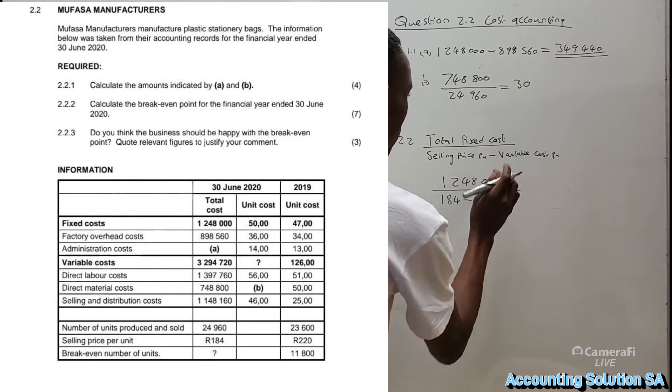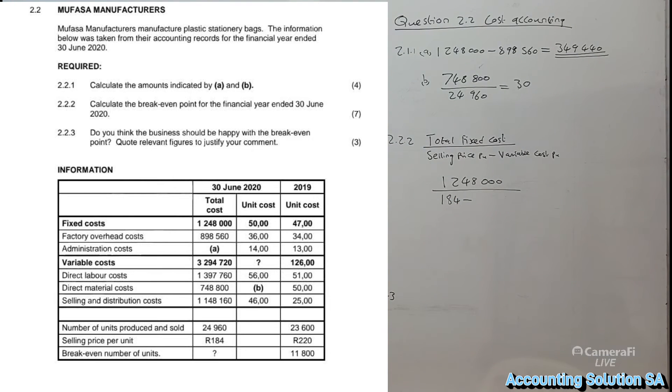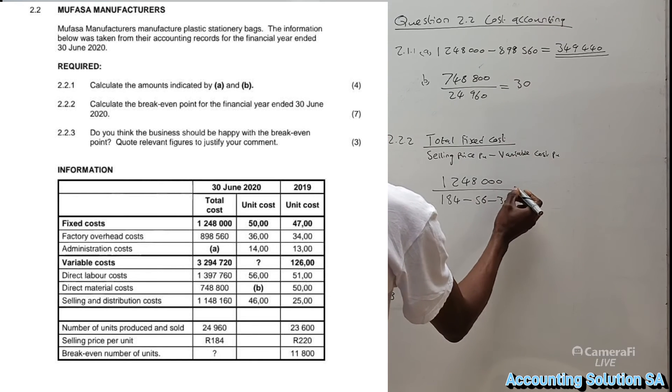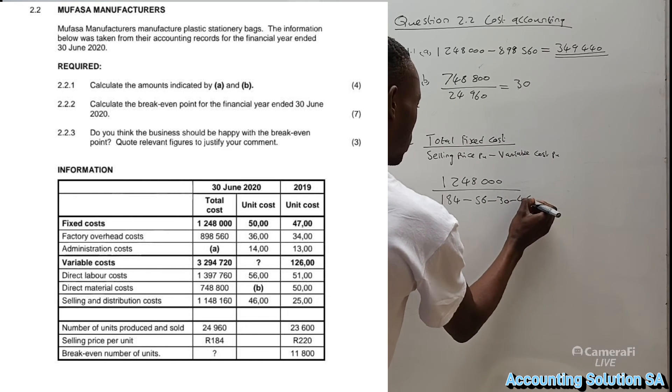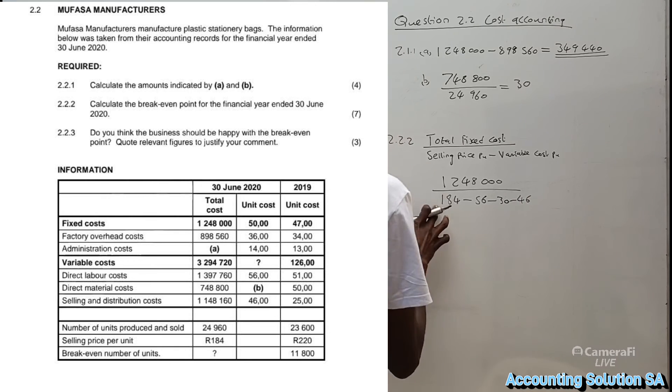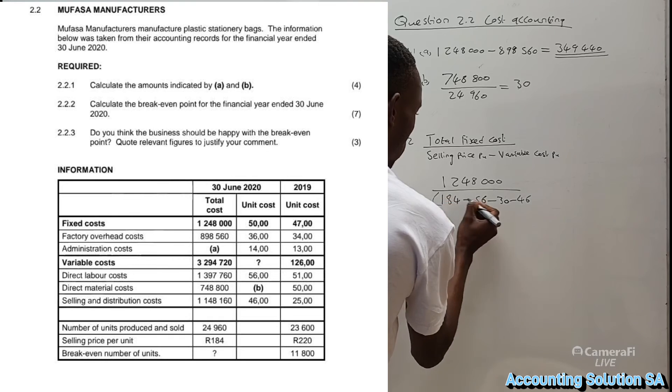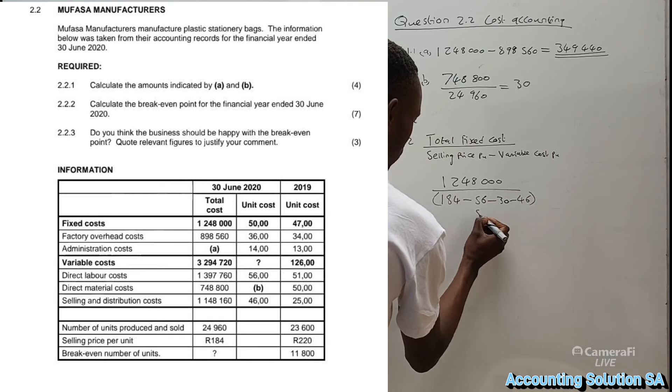Variable cost per unit: they didn't give us the total, the reason is they want us to calculate number B. Now because we know it's 30, our variable will be 56. We're going to have 56 from direct labor, minus 30 that we got, and we also minus the last one of 46. If you add all this, it's going to give you 52.